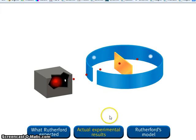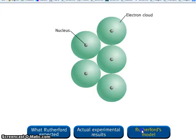Based on the results of his experiment, Rutherford postulated a nuclear atom. All of the positive charge and most of the mass of the atom is concentrated in a very small volume called the nucleus.